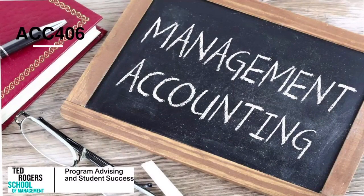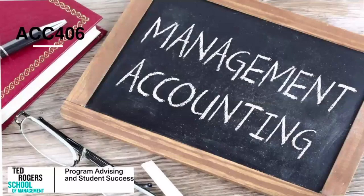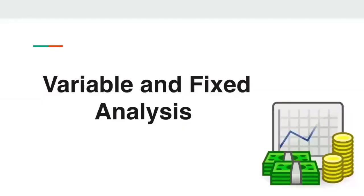Hello, everyone. Today we'll be reviewing ACC 406 Managerial Accounting, more specifically Chapter 11. We'll be taking a closer look into variable and fixed analysis. A quick hint for this video is to remember any time you are finding a variance, you will need to place either the letter U or F beside it. This will become clearer as we work through the problem.